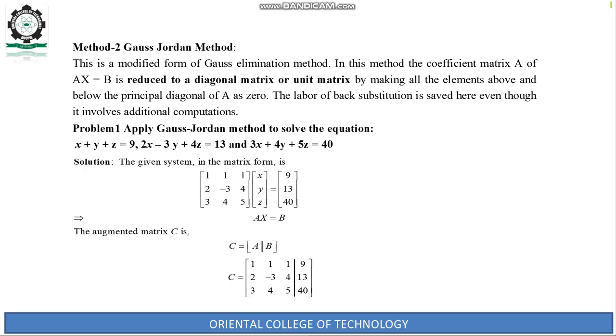x + y + z = 9, 2x - 3y + 4z = 13, and 3x + 4y + 5z = 40. The given system can be written in matrix form as Ax = B. The coefficients of x, y, z form matrix A.